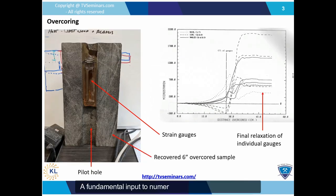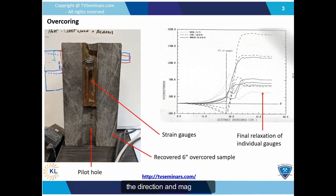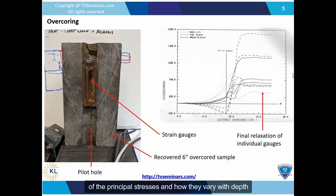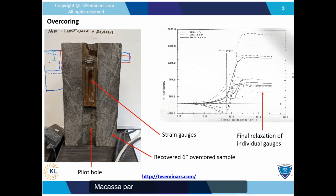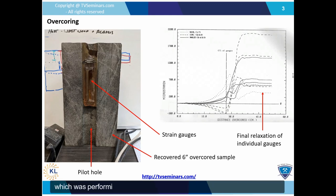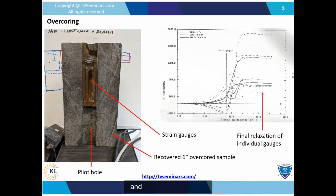A fundamental input to numerical models is a stress tensor — the direction and magnitude of the principal stresses and how they vary with depth. To establish the local stress tensor, Macassa participated in a program with CANMET, which was performing over-coring measurements at several mines in Ontario and Quebec in the 1980s.